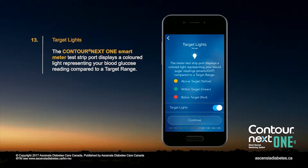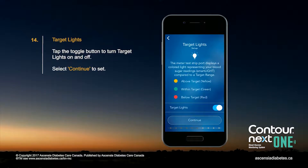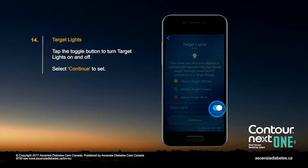The test strip port displays a colored light representing your blood glucose reading compared to a target range. Tap the toggle button to turn target lights on and off, then select Continue.